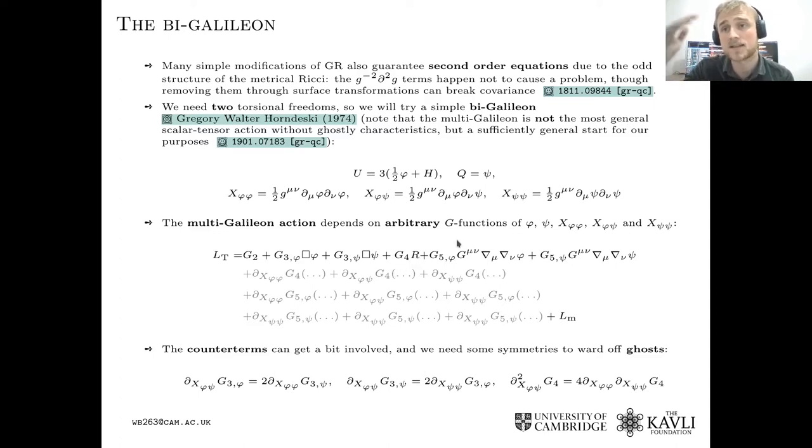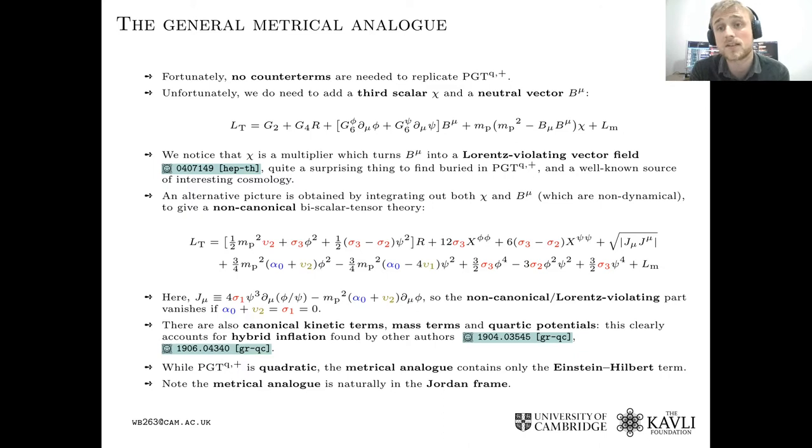Now, generally, the bi-Galileon, if you add extra higher order terms, you will need to compensate them with counter terms to satisfy the Ostrogradsky theorem. Fortunately, in order to use the bi-Galileon to replicate quadratic torsion theory, you don't need those counter terms. In fact, all you need are G2 and G4, which are arbitrary functions of the two scalars and their kinetic terms. G4 is multiplied by Ricci scalar. And then you add to this, instead of higher order terms and counter terms, you add to this an extra third scalar and a neutral vector, which is a bit annoying. But it turns out that the way in which you need to add these is quite analogous to the model of Lorentz violating vector fields. That's quite interesting. It means that those fields are actually going to be non-dynamical. They're just going to act as constraints, and you can directly integrate them out. But you do that at the expense of the G2 and G4 functions being polynomials. So we will actually end up with a non-canonical scalar tensor theory.